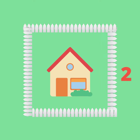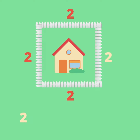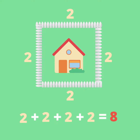If one side of the square is two units long, we know the other three sides are also each two units long. We can add two units plus two units plus two units plus two units to find the perimeter of the square, which equals eight units.